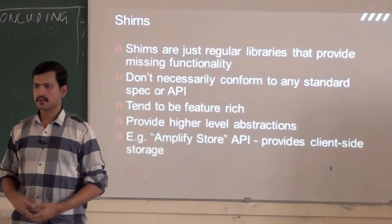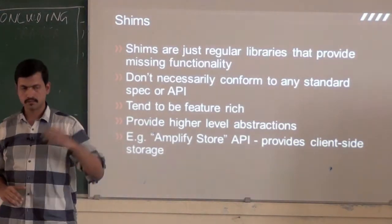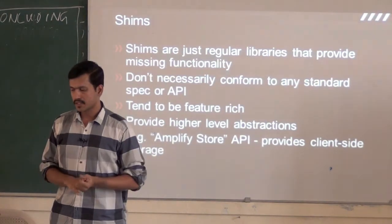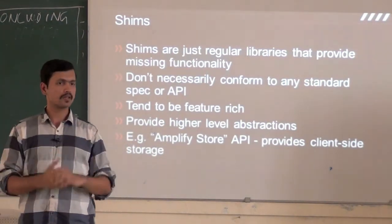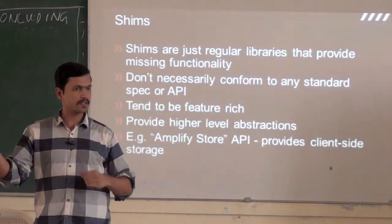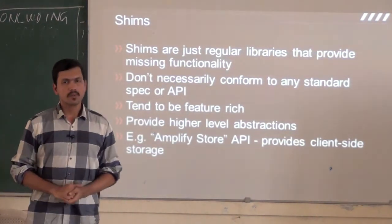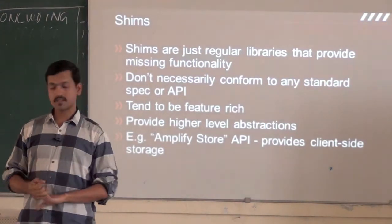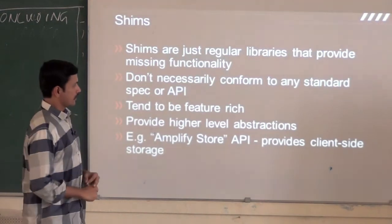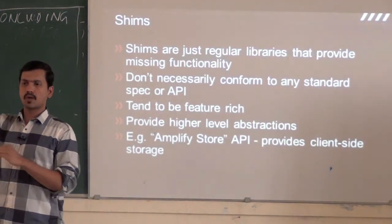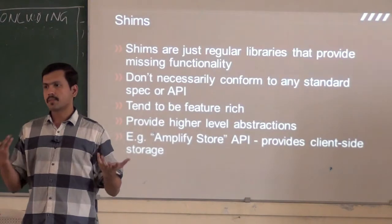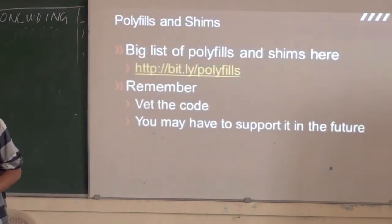In older clients, the polyfill would probably use Flash or ZeroMQ to supplement that functionality. But you get to write the same code — you don't have to write different code. Shims are typically libraries which tend to be a somewhat higher-level abstraction on top of some feature. For example, there is a shim called AmplifyStore — AmplifyJS is a JavaScript library and there is a piece called Store in it which provides client-side storage capabilities. There are multiple client-side storage options — DomStorage, IndexedDB. AmplifyStore is an API built on top of that; it will use whatever is available. But it has its own API — it is not a W3C API. That's what we mean when we say shims.